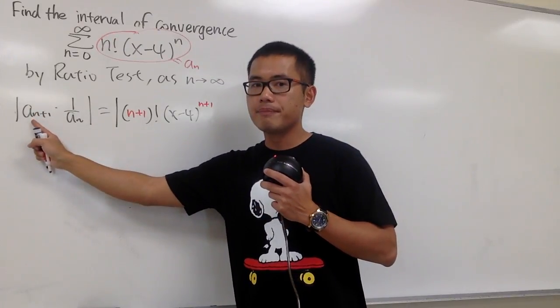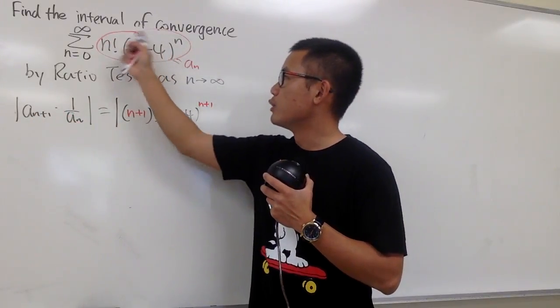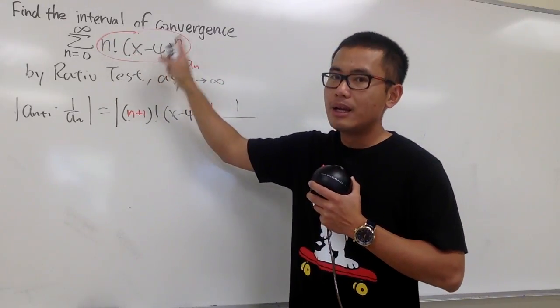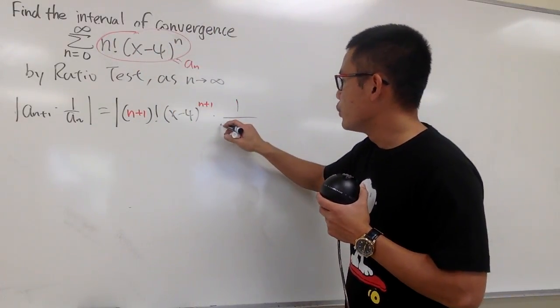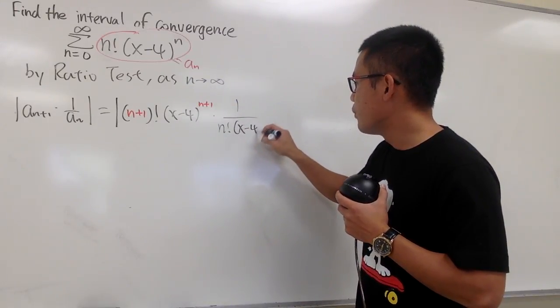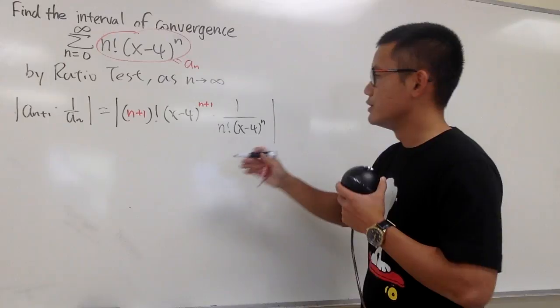This is the a_(n+1). Now, we will multiply by the reciprocal of this. So we do 1 over that. Both of them will go down to the denominator. We will have the n factorial here, and then (x-4) to the nth power, just like this.